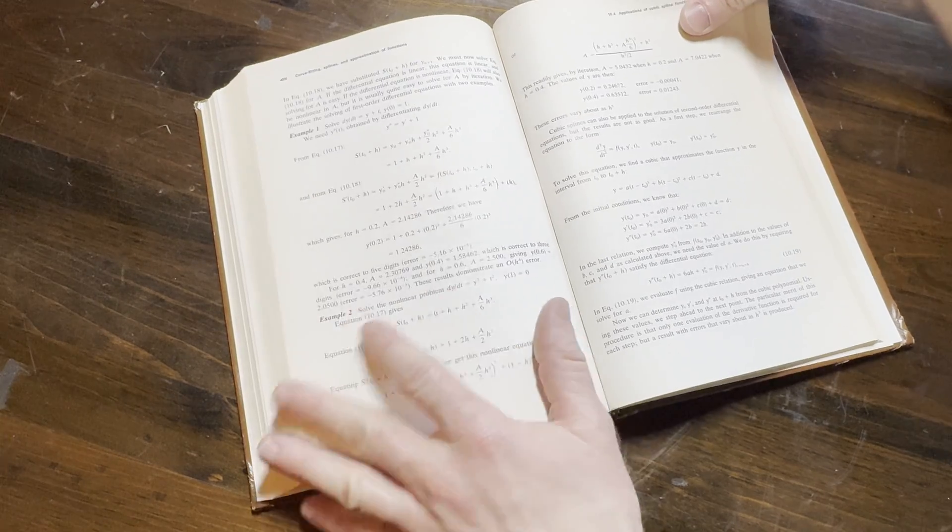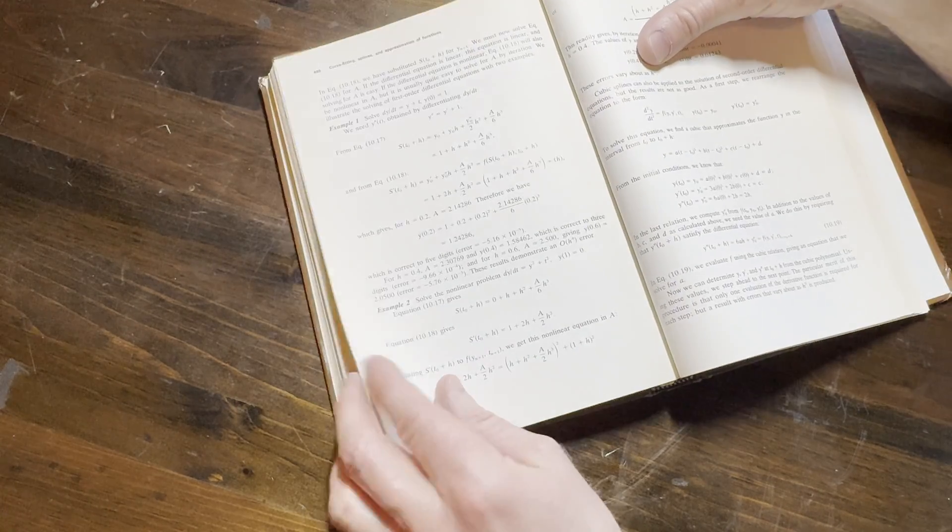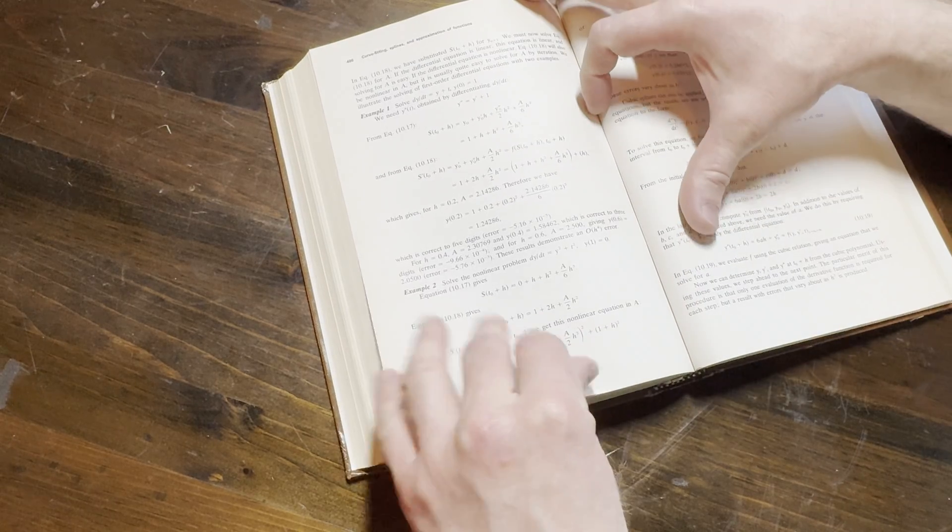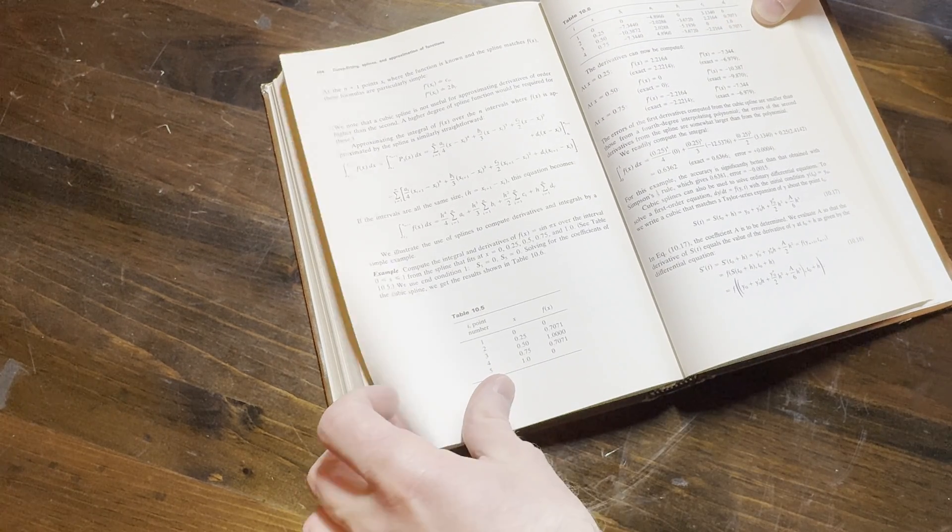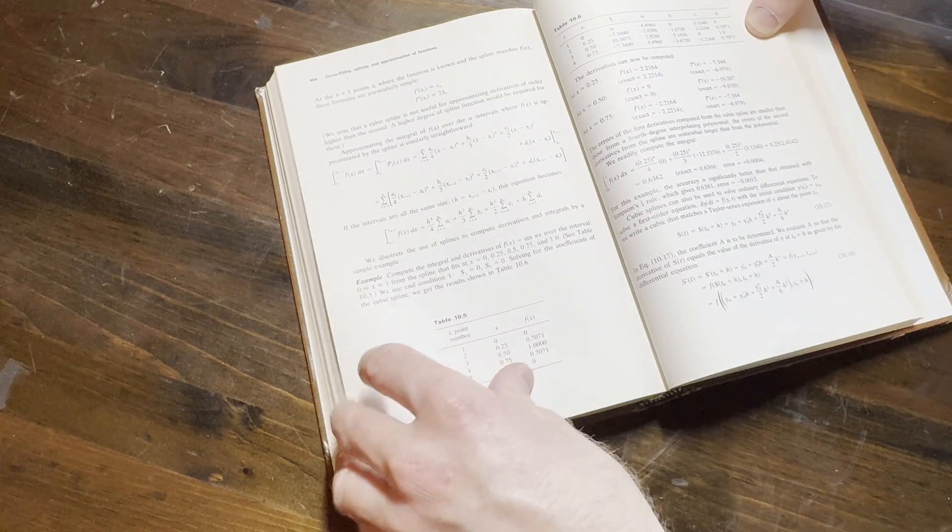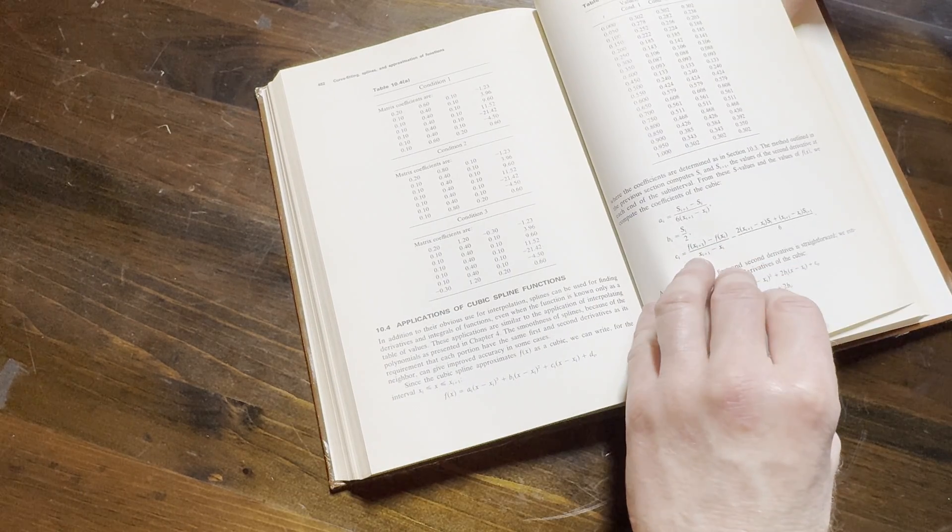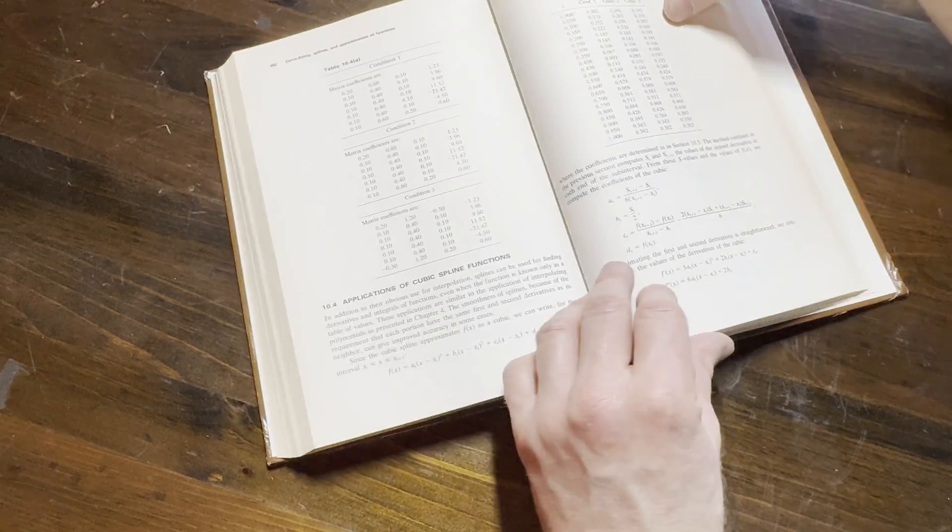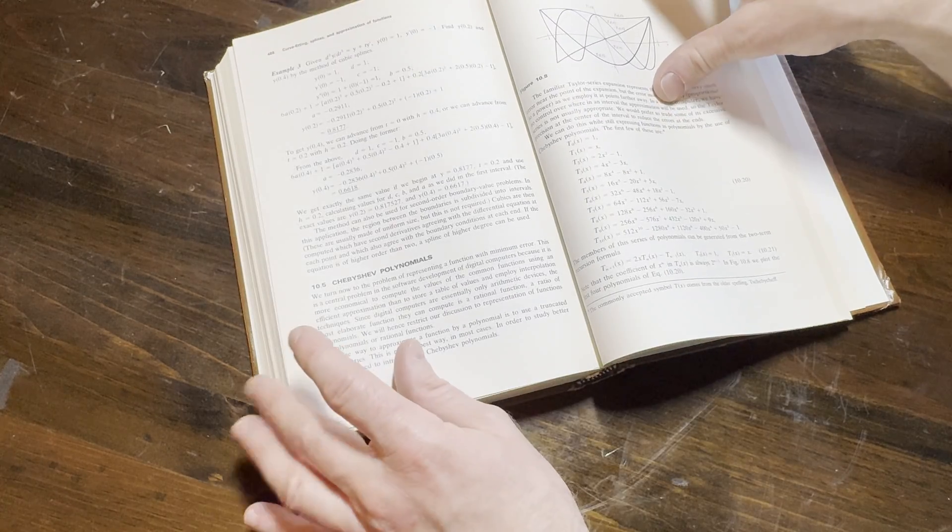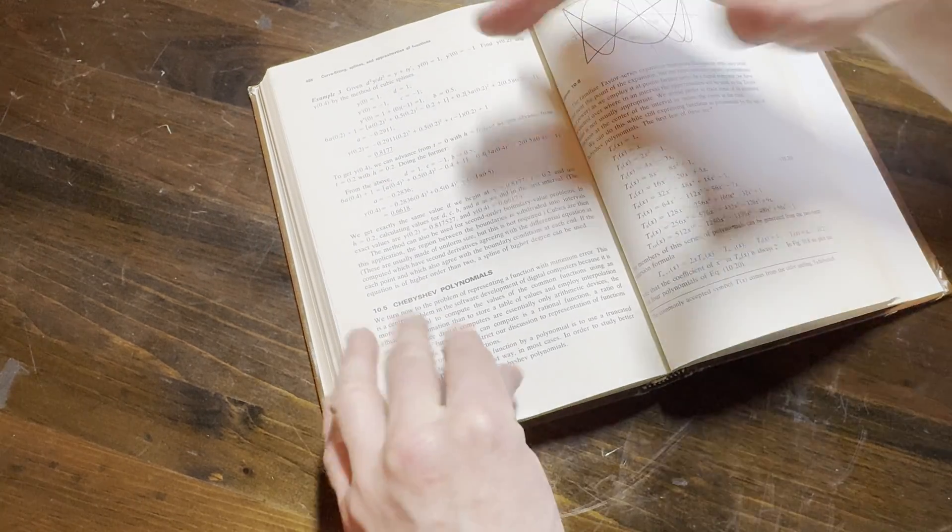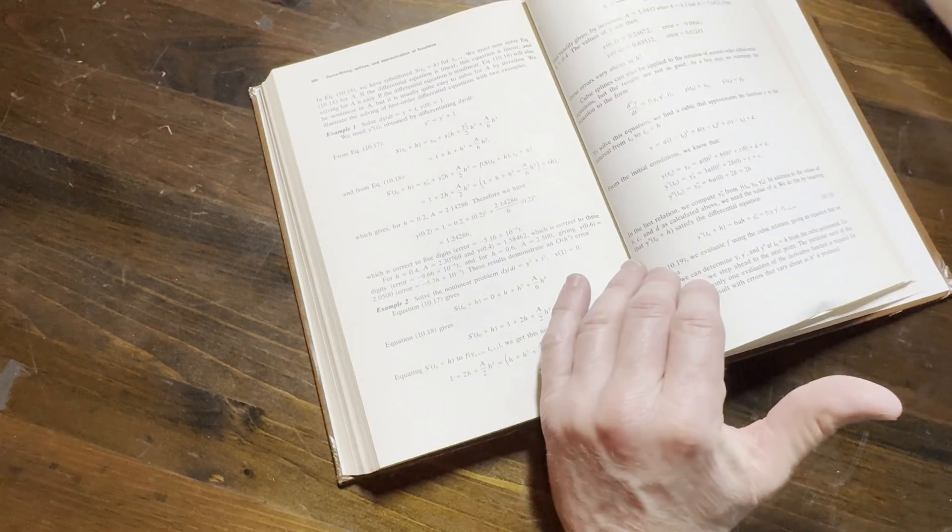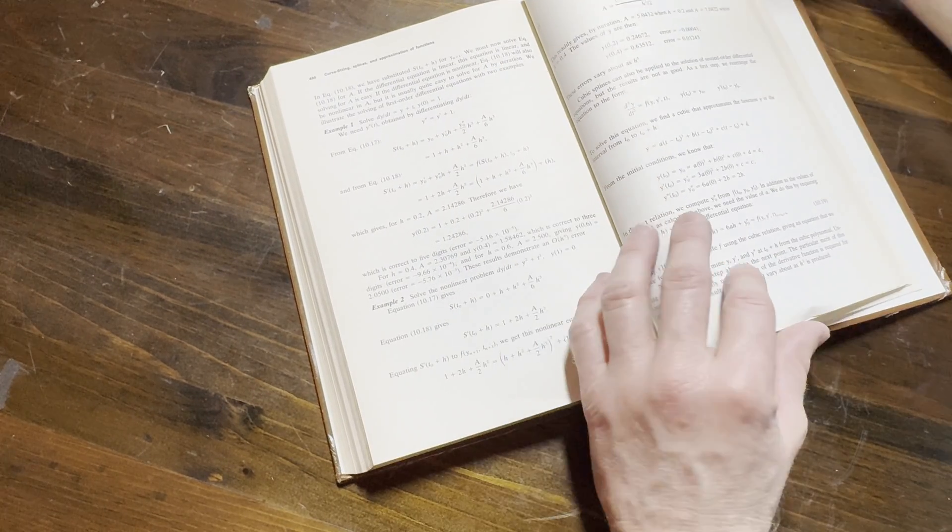And yeah, what's this here? Oh, this is cool. This is cubic spline functions. That's the section. All the approximation methods, they all look very similar because a lot of them are. A lot of them are.